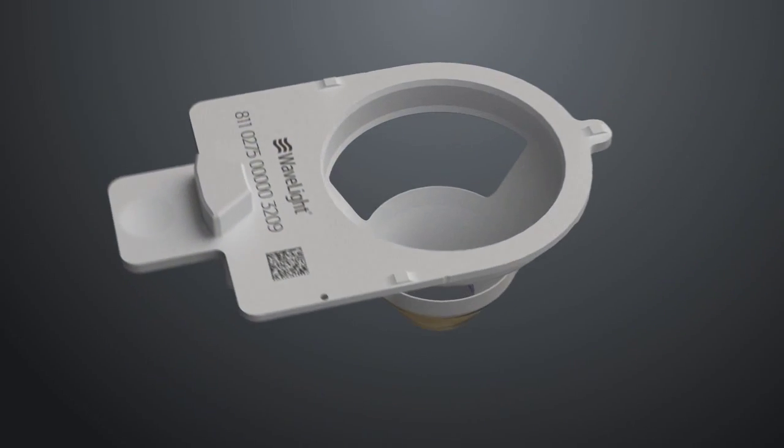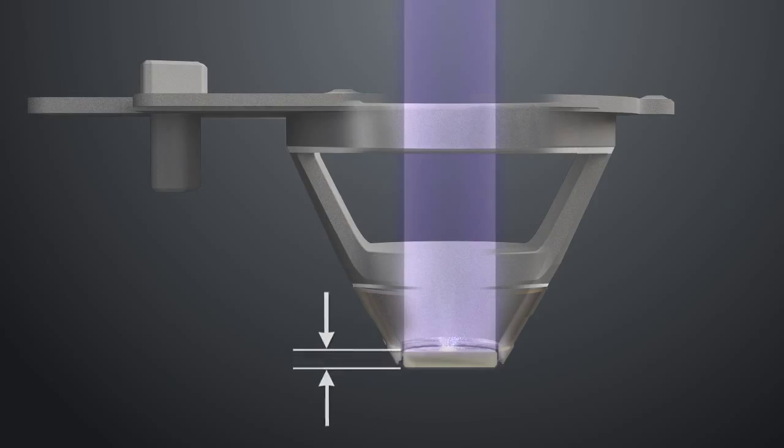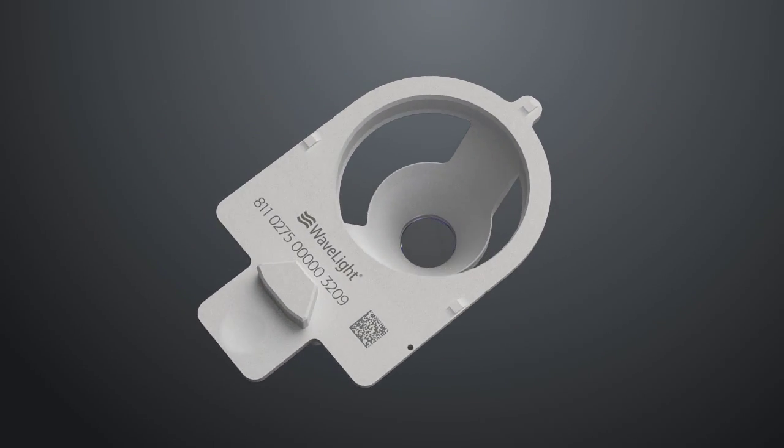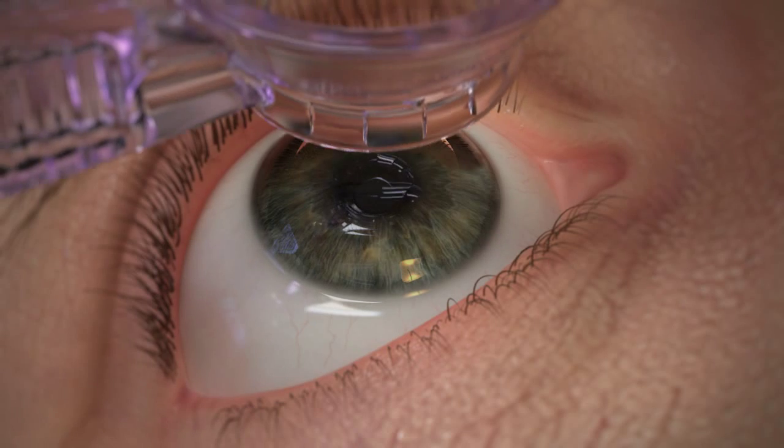The Wavelight FS200 uses a ballast control check to automatically calibrate each ablation cone. Adjusting for the thickness of the glass and temperature shifts within the laser system's components, the calibration process provides consistent and predictable flap thickness.